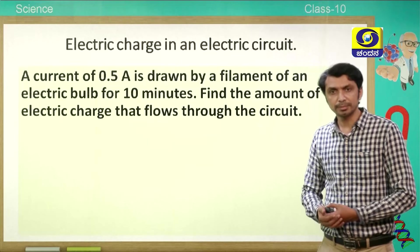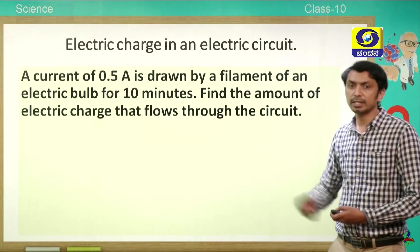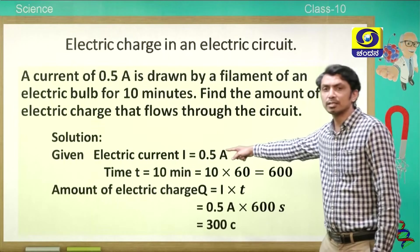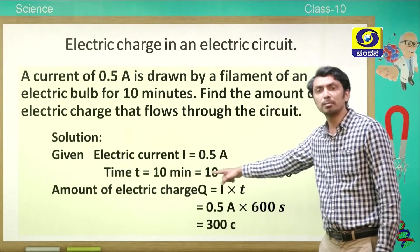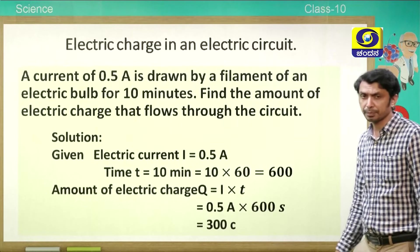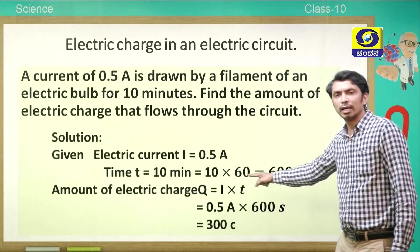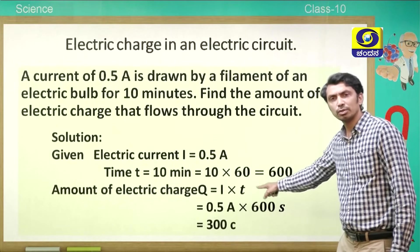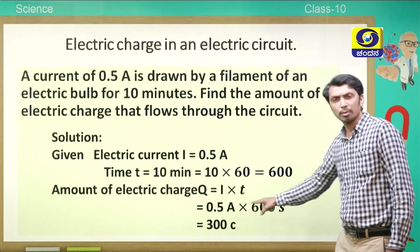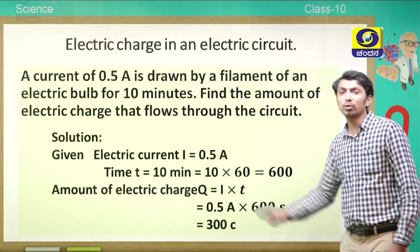Let us solve a numerical problem. A current of 0.5 ampere is drawn by the filament of an electric bulb for 10 minutes. Find the amount of electric charge that flows through the circuit. Converting 10 minutes to seconds gives 600 seconds. Using Q = I × T, we get Q = 0.5 × 600 = 300 coulomb. That is the amount of electric charge.